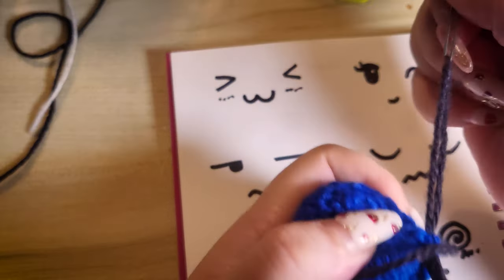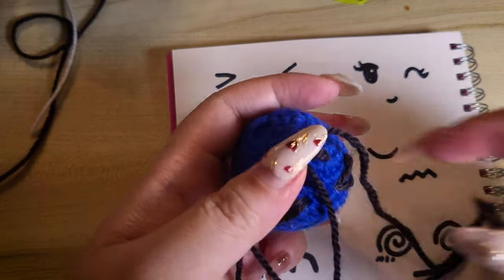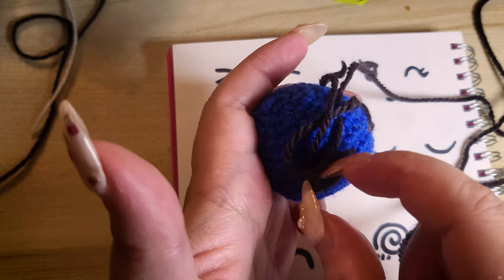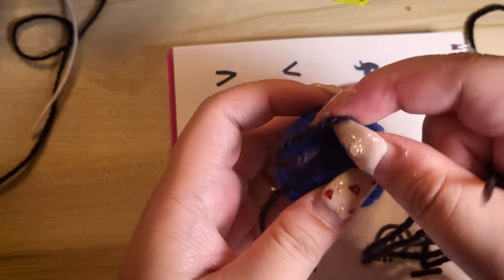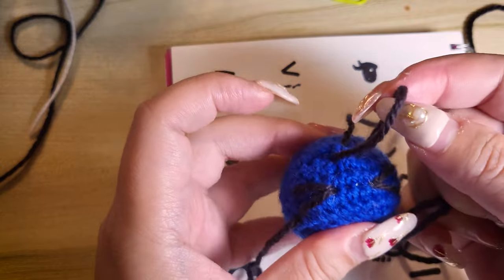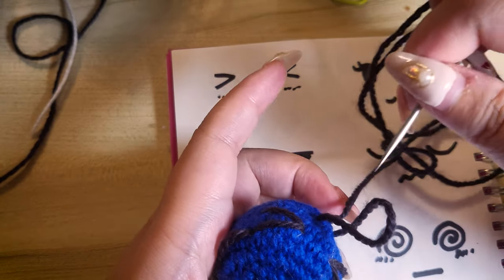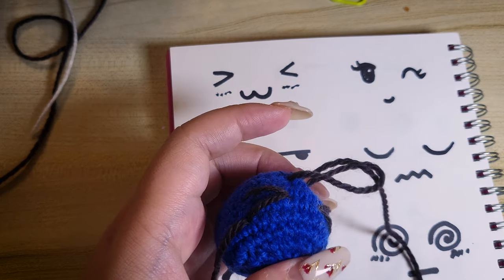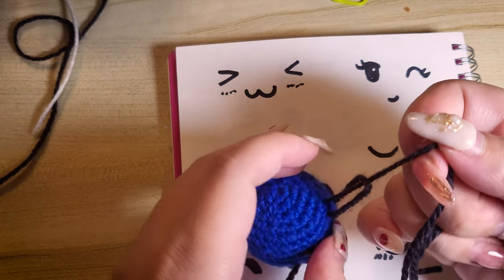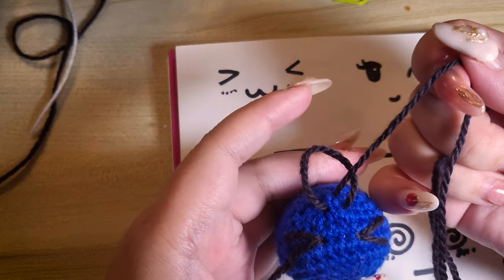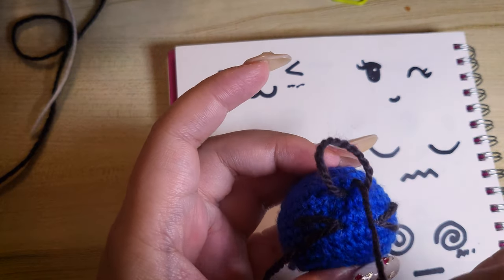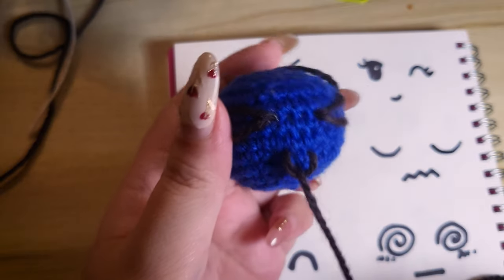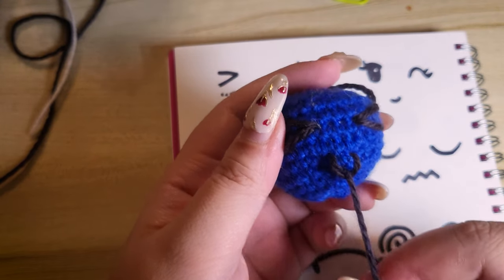Now carefully, don't pull the thread all the way through. You want to make sure that this live thread sits above. Like this. Now gently pull the thread until the mouth shaped to a curved smile.